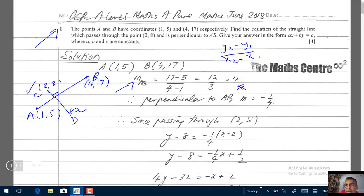So using the idea M1, M2 equals to negative 1, we can find the gradient of the line which is perpendicular to AB, in this case the line CD. So the gradient of the line CD should be negative 1 over 4 using this idea. You can write M2 equals to minus 1 over 4.